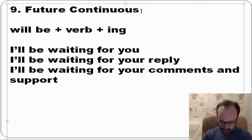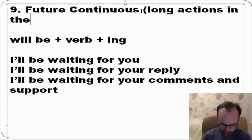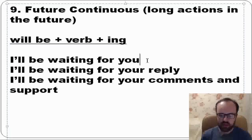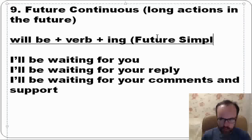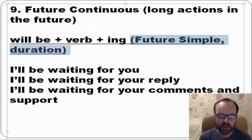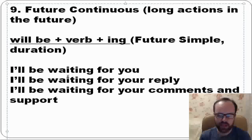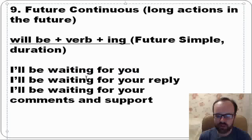Future continuous is for long actions in the future. We form it with will be plus verb plus -ing. I'll be waiting for you — we often use this tense with 'wait.' It's like future simple, but there is a long action, a duration. If I say 'I'll wait for you,' it's okay. But 'I'll be waiting for you' means I'm really waiting — it's important to me, it's a long action, not just a short one. I'll be waiting for your reply. I'll be waiting for your comments and support.